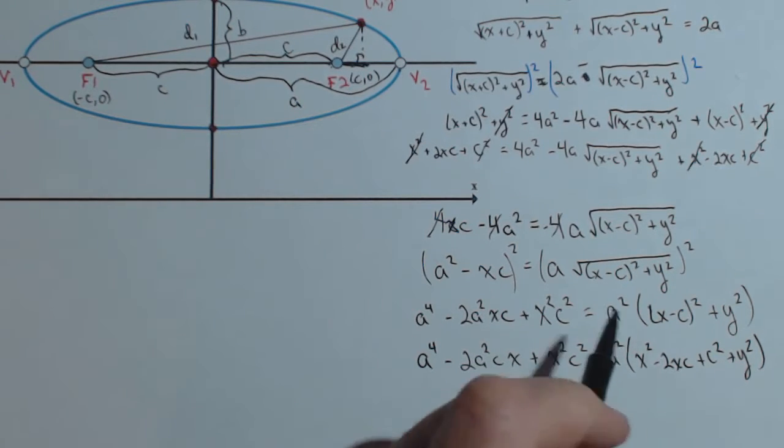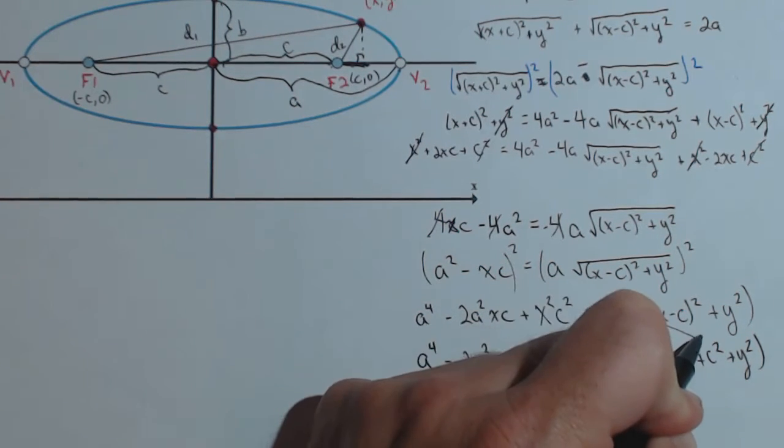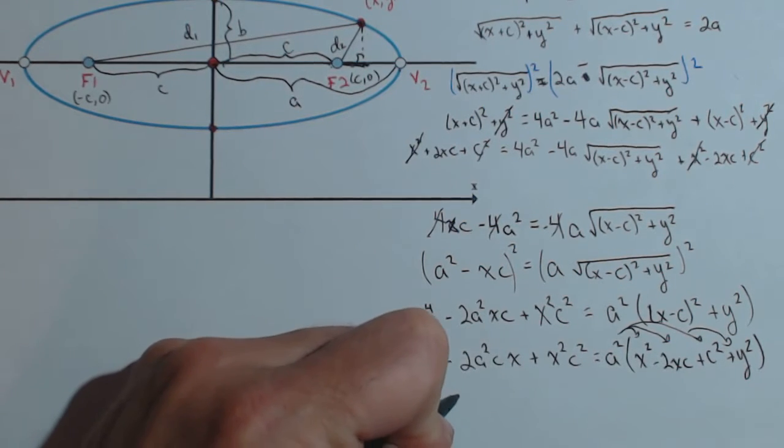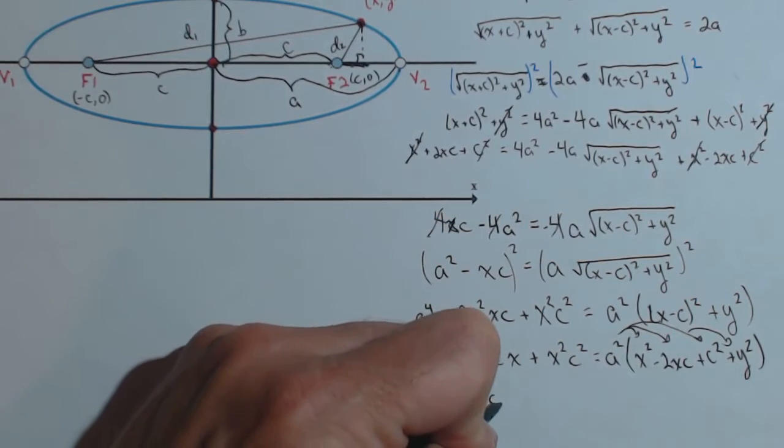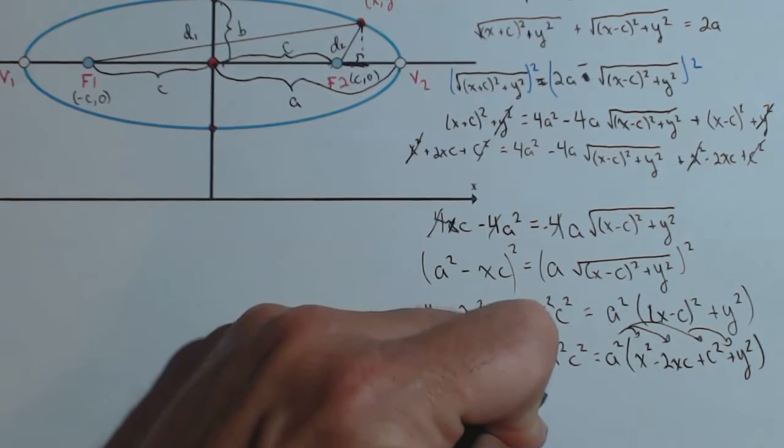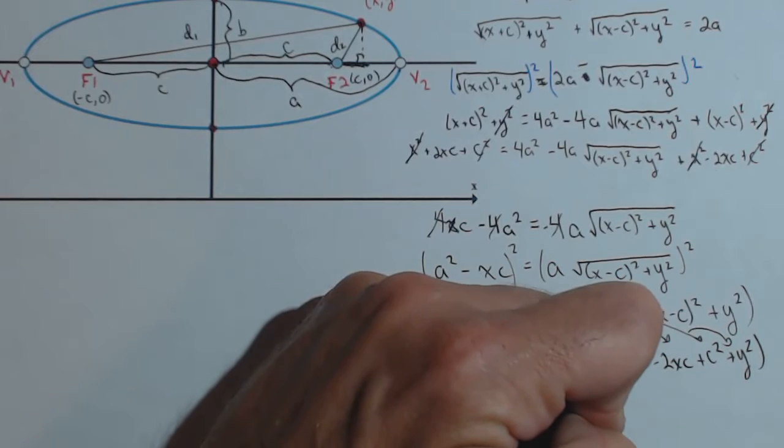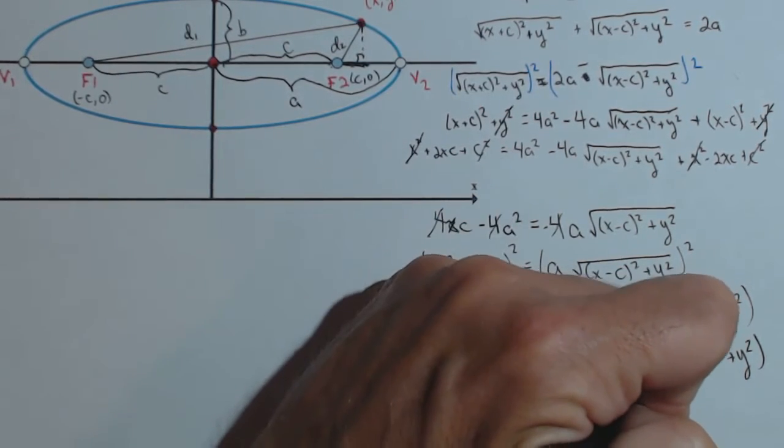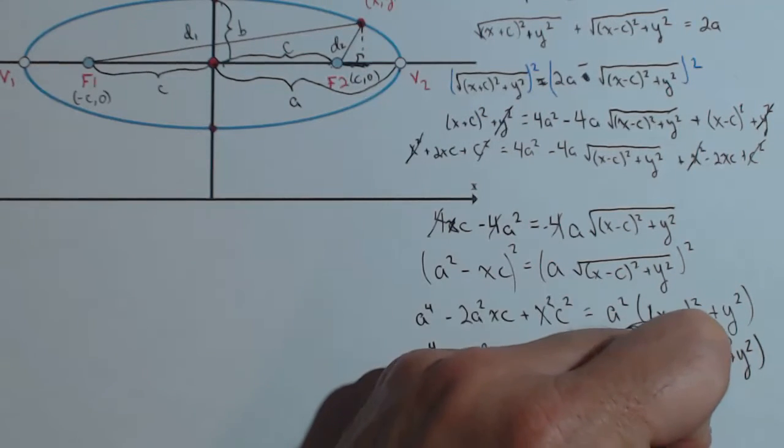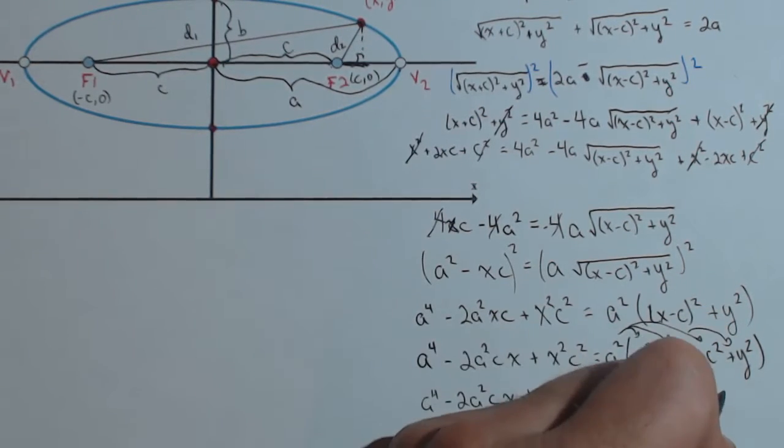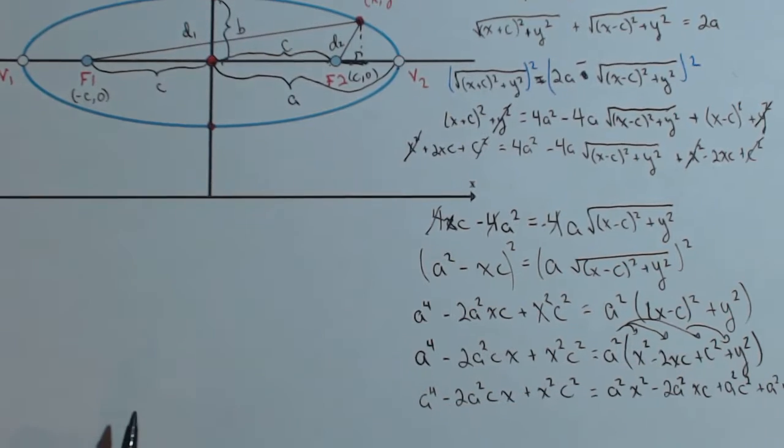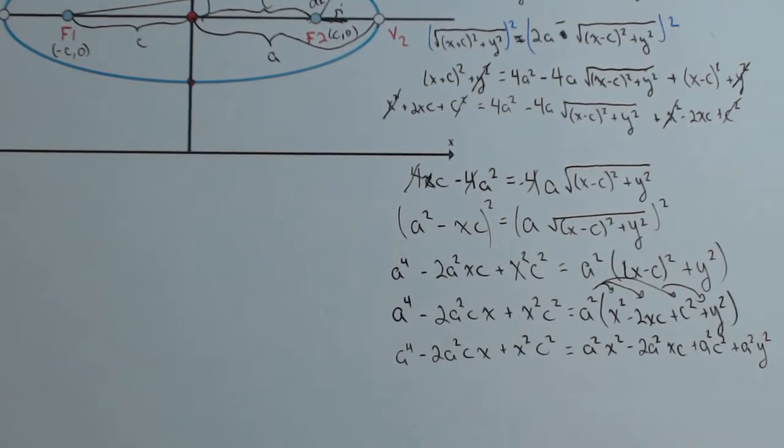So from here, I'm going to distribute the a squared term to all four of these pieces. So I have a to the fourth minus 2a squared cx plus x squared c squared equals a squared x squared minus 2a squared xc plus a squared c squared plus a squared y squared. Alright, looks like a big mess.